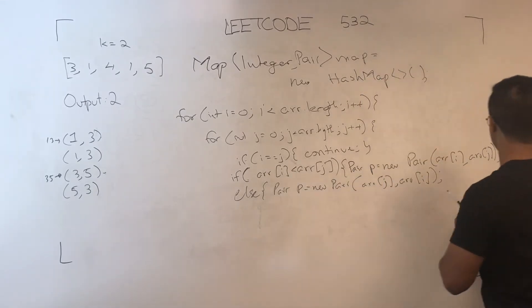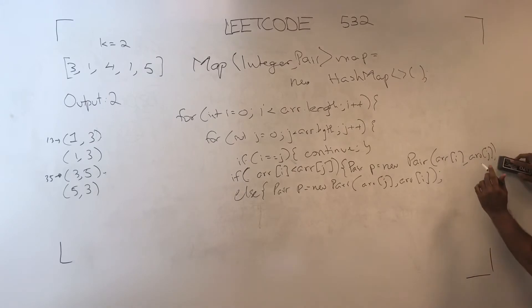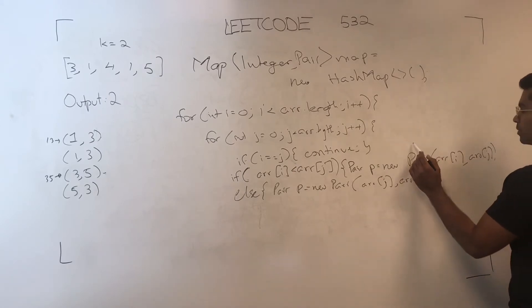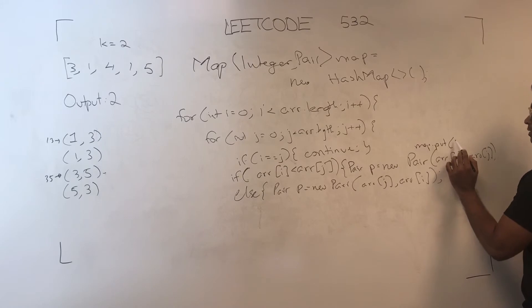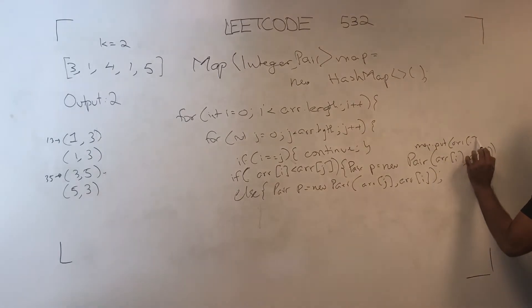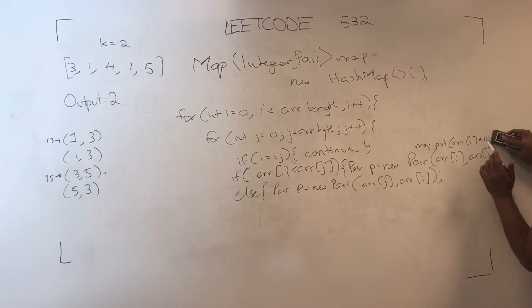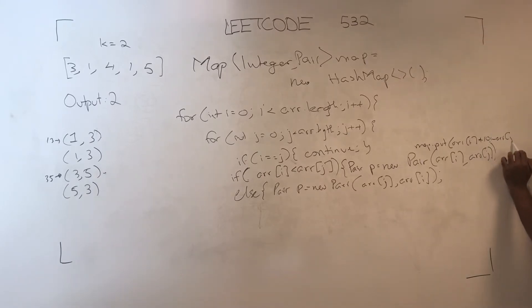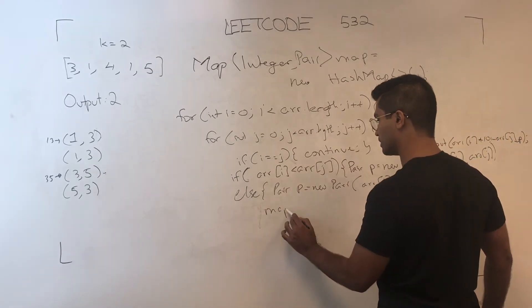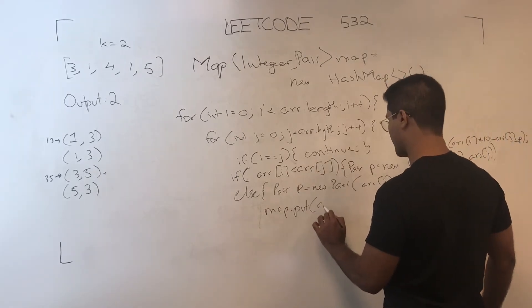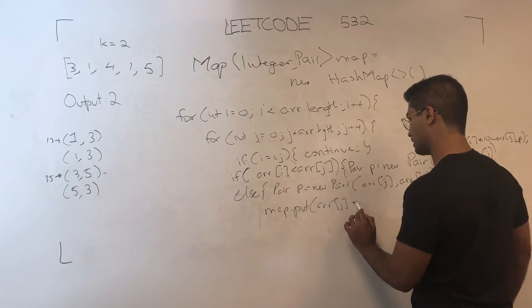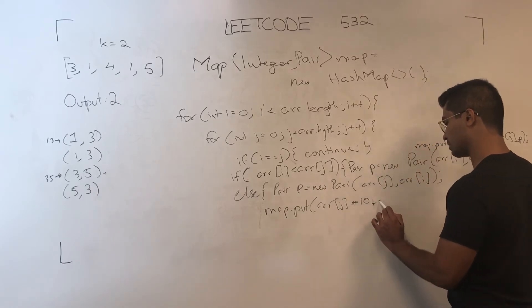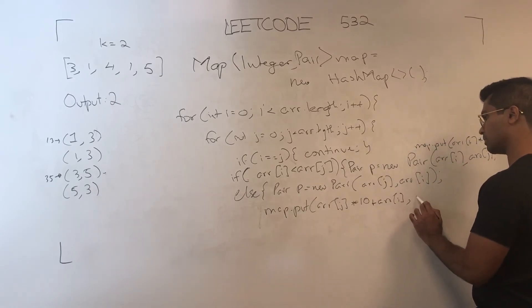And here I would put else map put array of I times 10 plus array of J comma P.